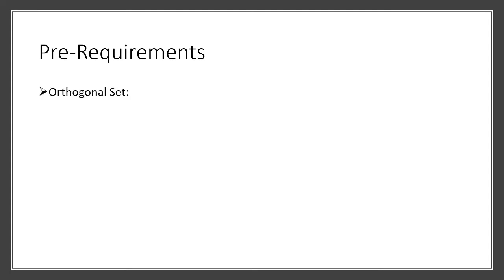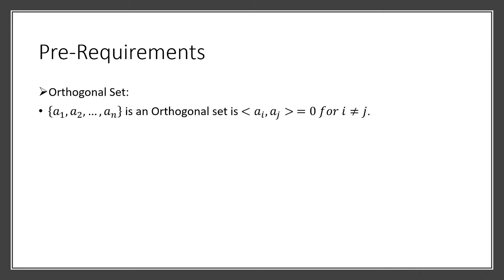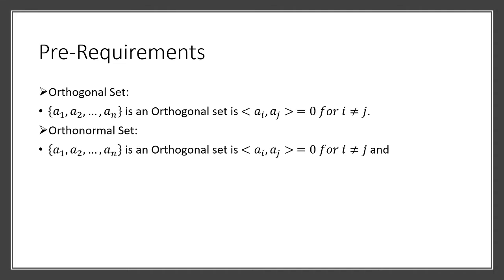Every student should know what an orthogonal set is before understanding the proof. A set is said to be orthogonal if the inner product of every element with every other element is 0. A set is orthonormal if it satisfies two conditions: the inner product with any other element is 0, and the inner product with itself is 1. In an orthogonal set the inner product with itself could be anything, but for an orthonormal set it must be exactly 1.